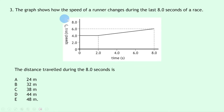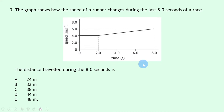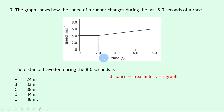Question 3 says the graph shows how the speed of a runner changes during the last 8.0 seconds of a race, with speed in metres per second on the y-axis and time in seconds on the x-axis. The distance travelled during the 8.0 seconds is found by calculating the area under the speed-time graph. We want to deal with simple shapes like rectangles and triangles, using the area between the solid line and the x-axis.